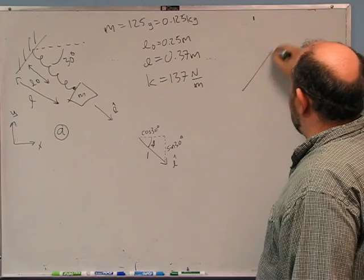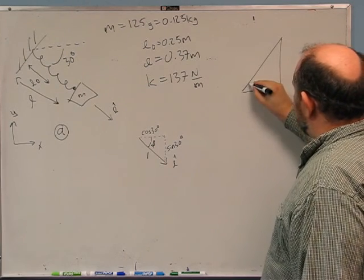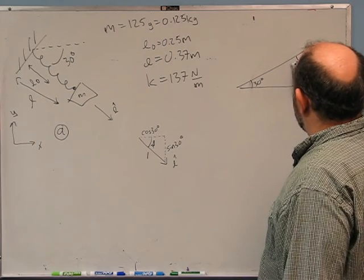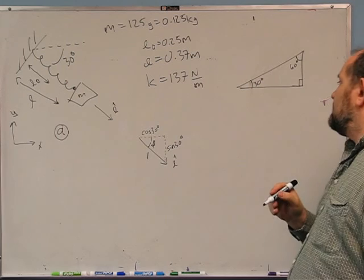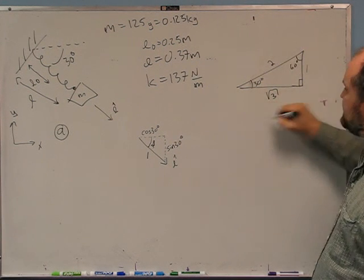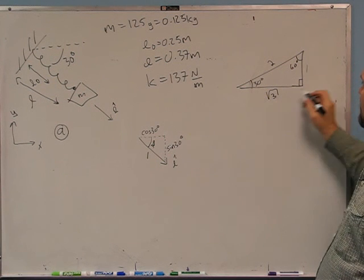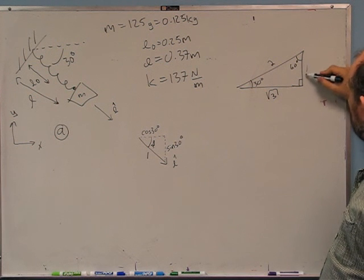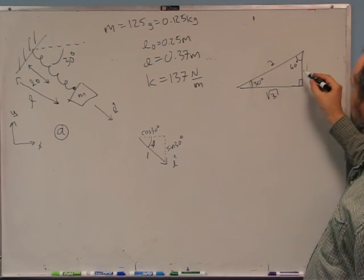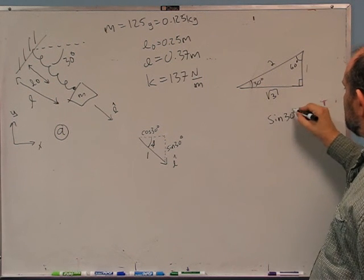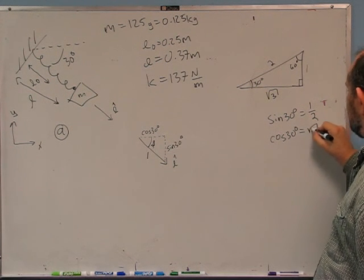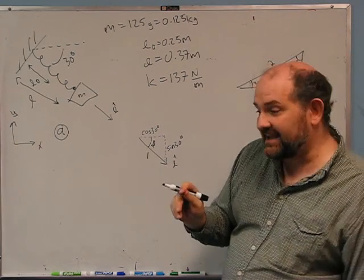Here's something you may or may not remember: 30-60-90 is a special triangle. It's a right triangle where if one leg is 1, the other is root 3, and the hypotenuse is 2. You can verify with the Pythagorean theorem: 1² + (√3)² = 1 + 3 = 4 = 2². So sine of 30° is opposite over hypotenuse = 1/2, and cosine 30° = √3/2. You could also just use a calculator.